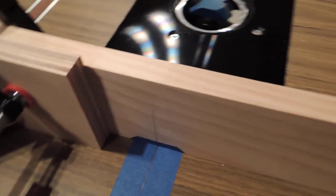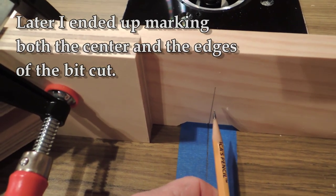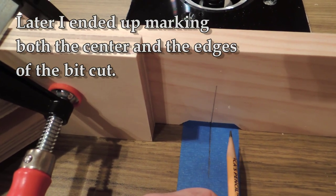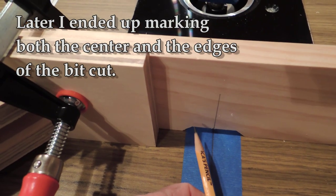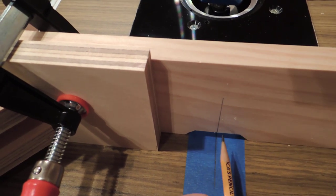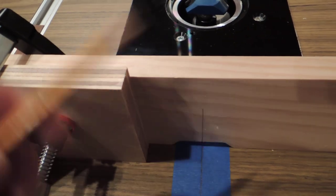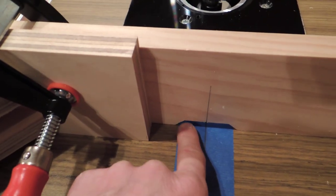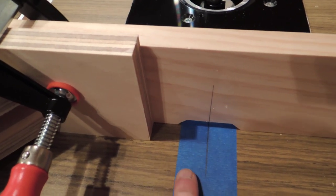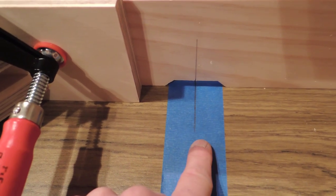Now my next problem is I need to locate this area of relief correctly on each stile because the rail is going to go in there. So what I decided to do was mark the center of the relief that's cut by the router bit. So from this edge to this edge, not the angled part, but just the flat part, it's one and a half inches. So half of that is three quarters of course. So that's where my mark is. So it's dead center in this area right here.